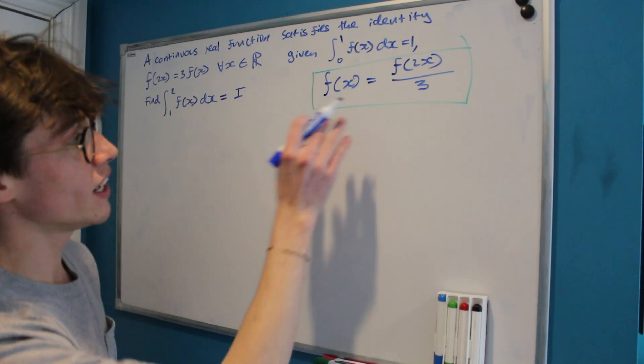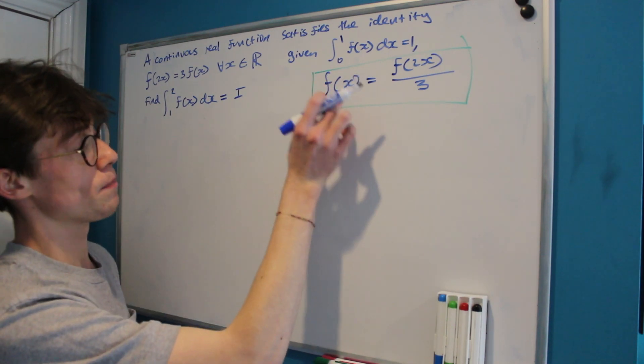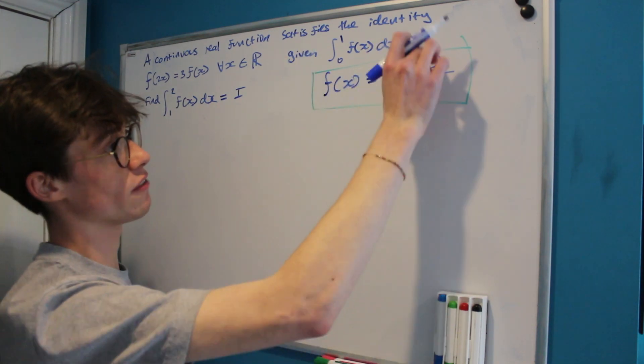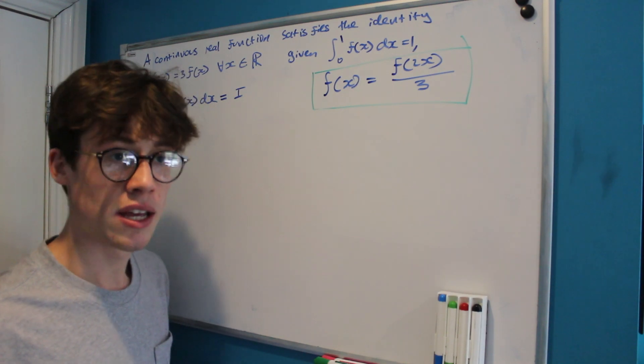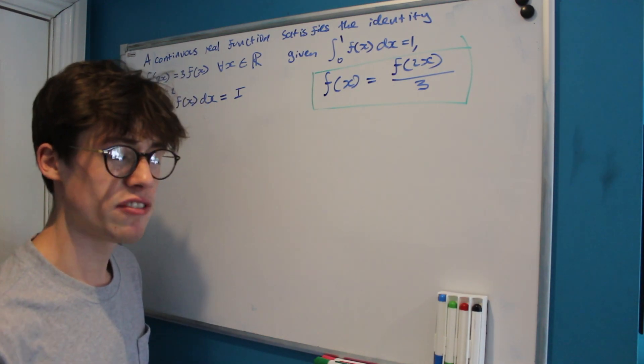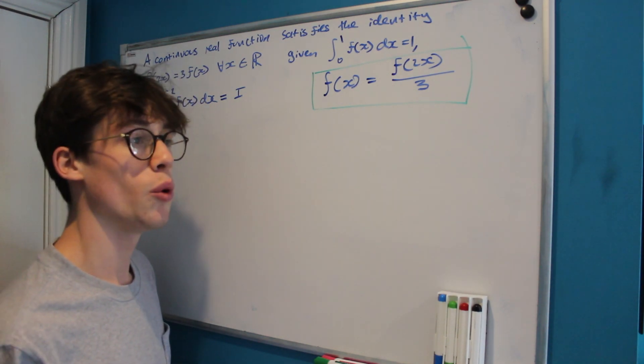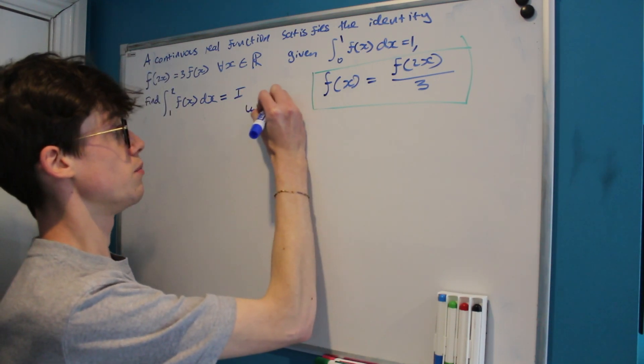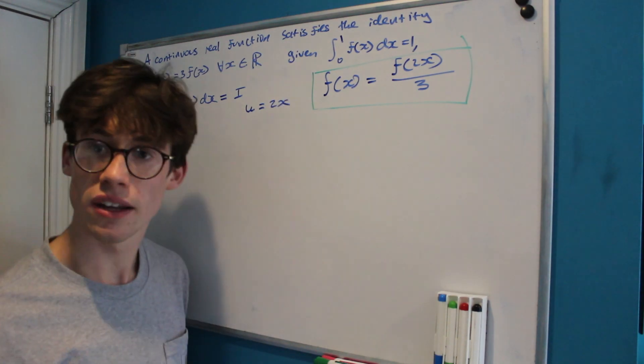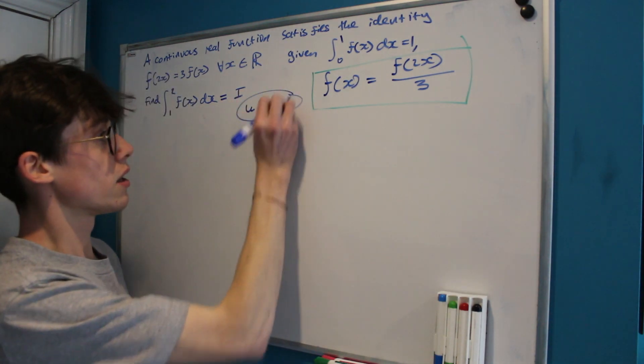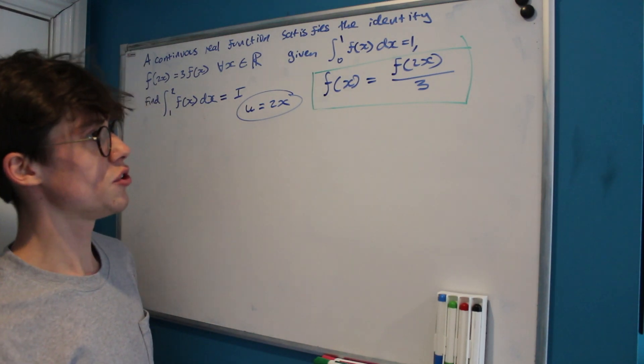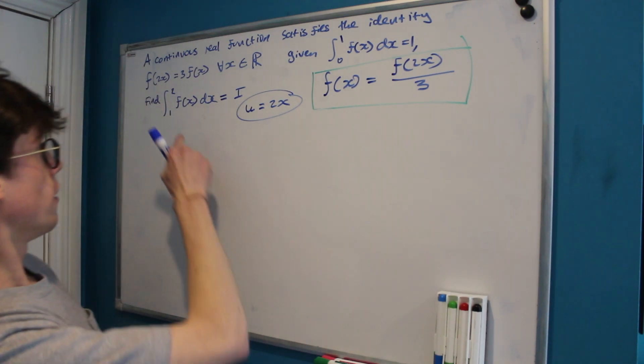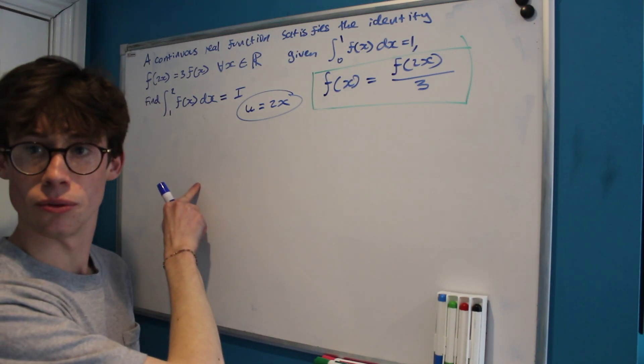So the fact that we've got this relationship here, that f(x) is equal to f(2x) over 3, means that we should have in mind that at some point we want to make the substitution u equals 2x, and that when we make that substitution we want to end up with our target integral i.